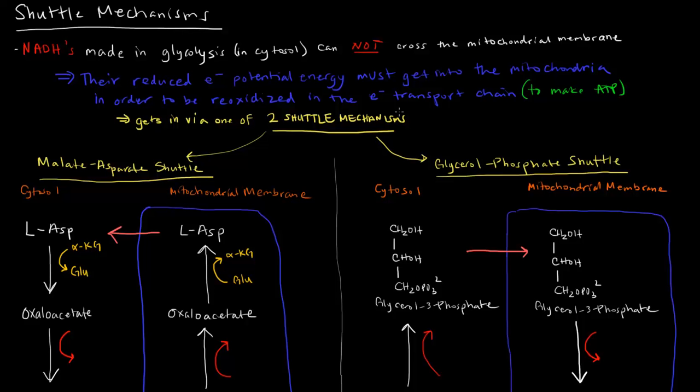So we need to get these NADHs somehow into the mitochondria, but the NADHs can't cross the mitochondrial membrane. So how do we get their reduced potential energy into the mitochondria? Well, the way we do that is via one of these two shuttle mechanisms.